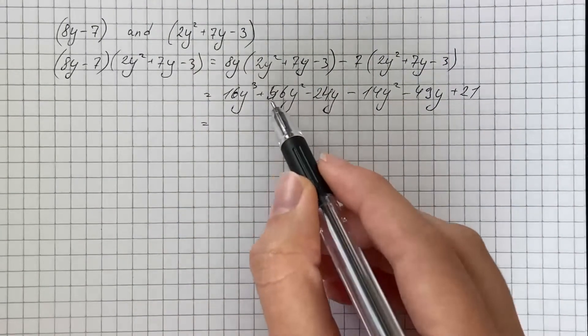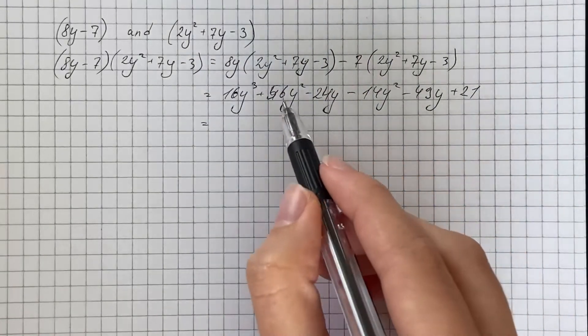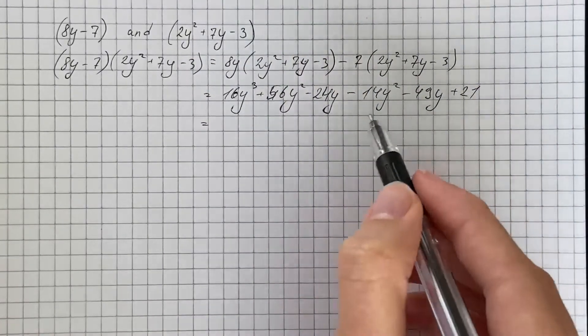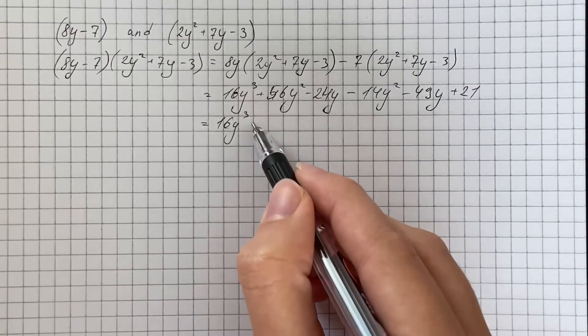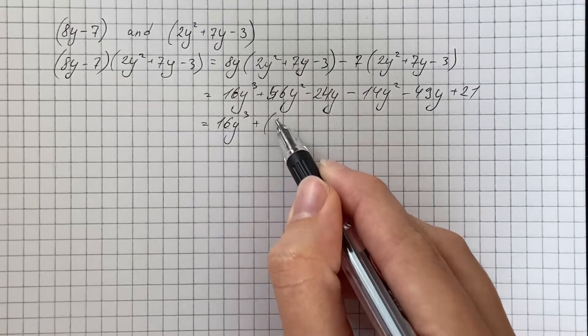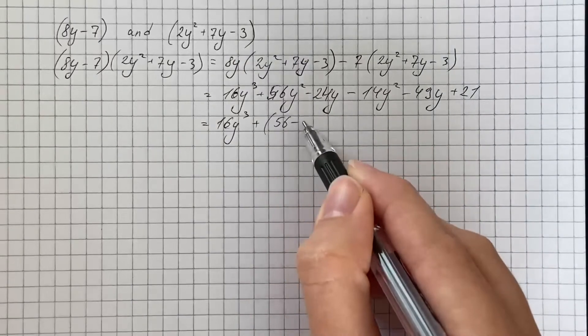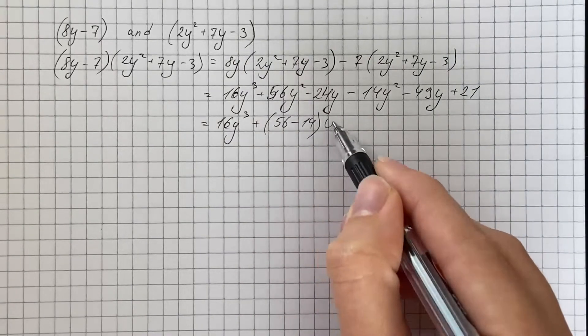So now we're grouping like terms, terms that have the same power, and that's going to be 16y cubed plus 56 minus 14 times y squared.